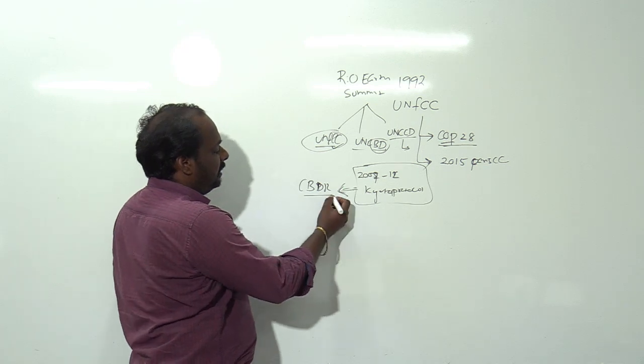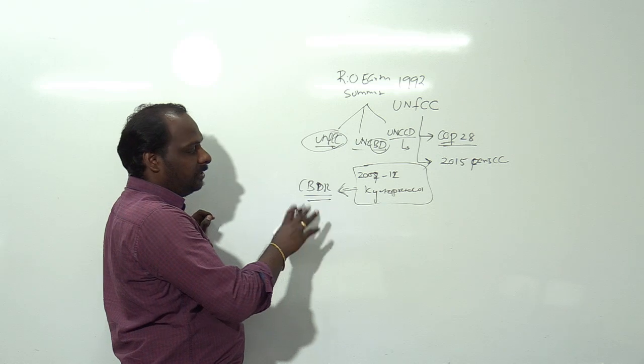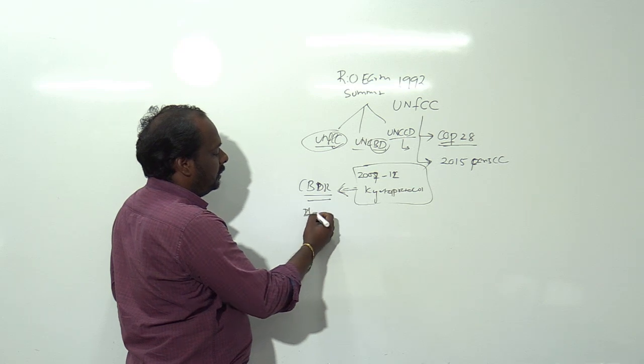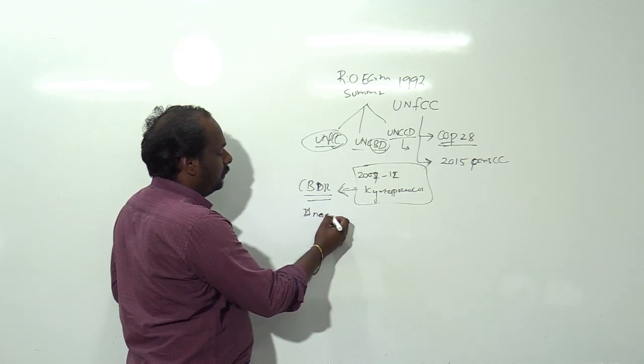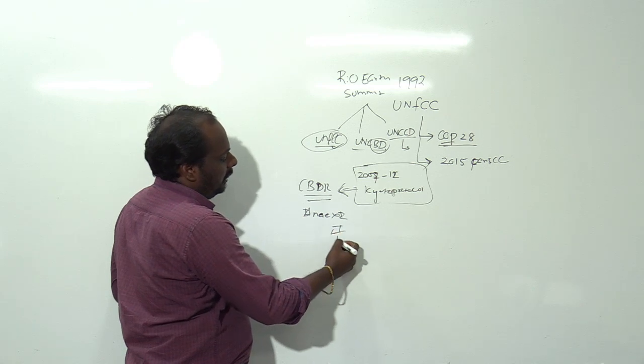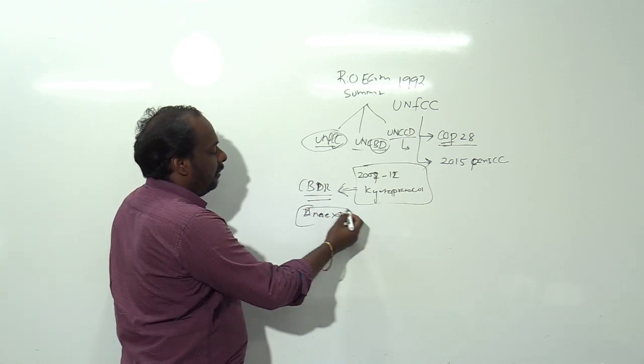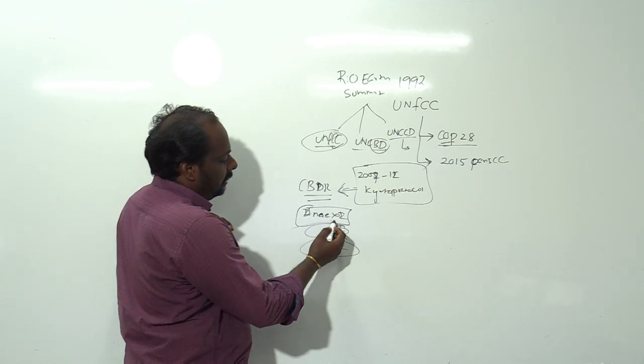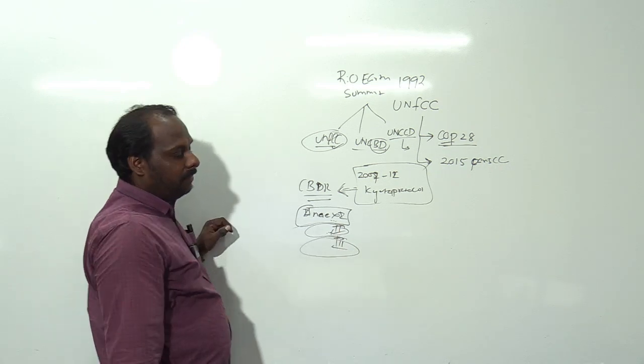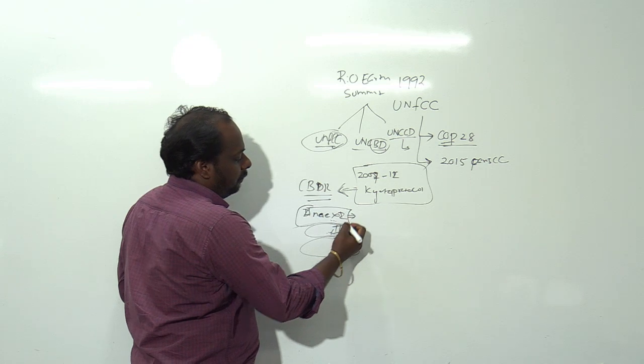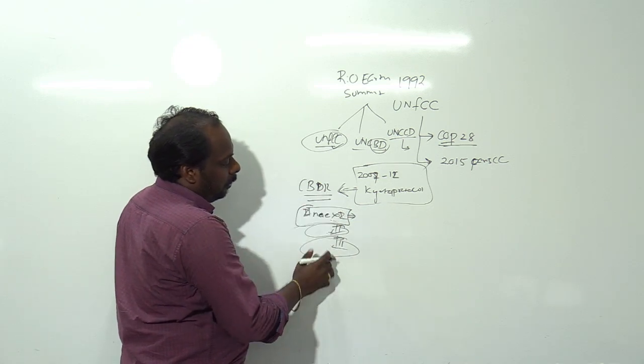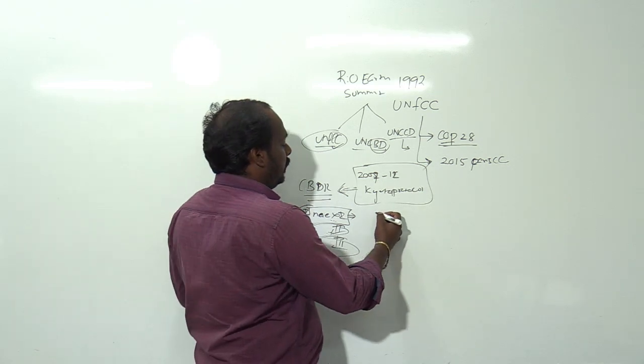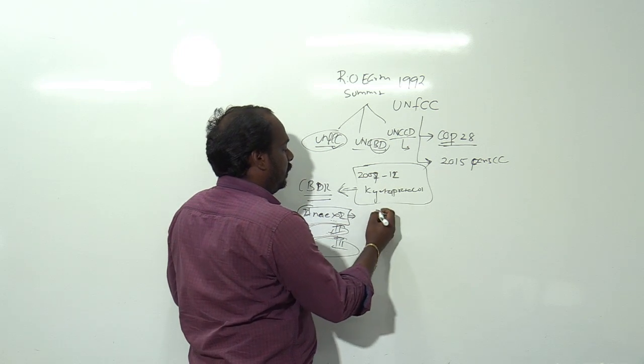Common but differentiated responsibilities means some countries according to their development status will have different responsibilities. Developed countries and developing countries - developed countries have released more carbon dioxide and are in the top categories.